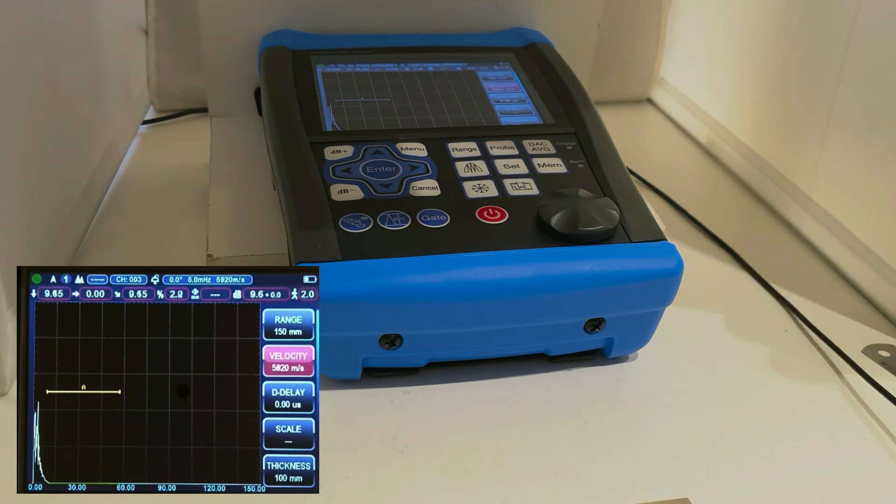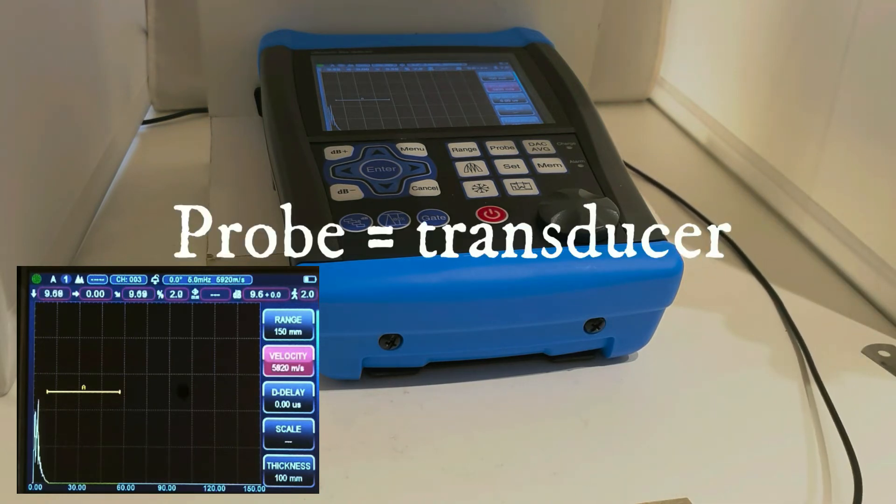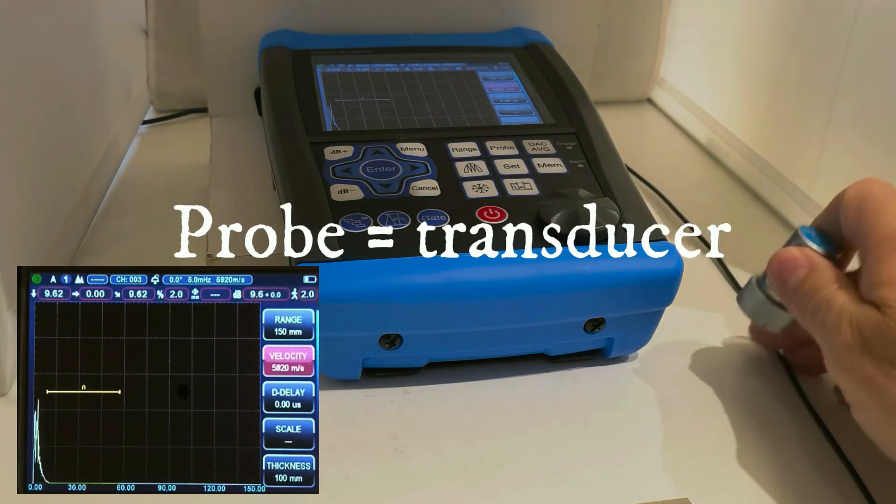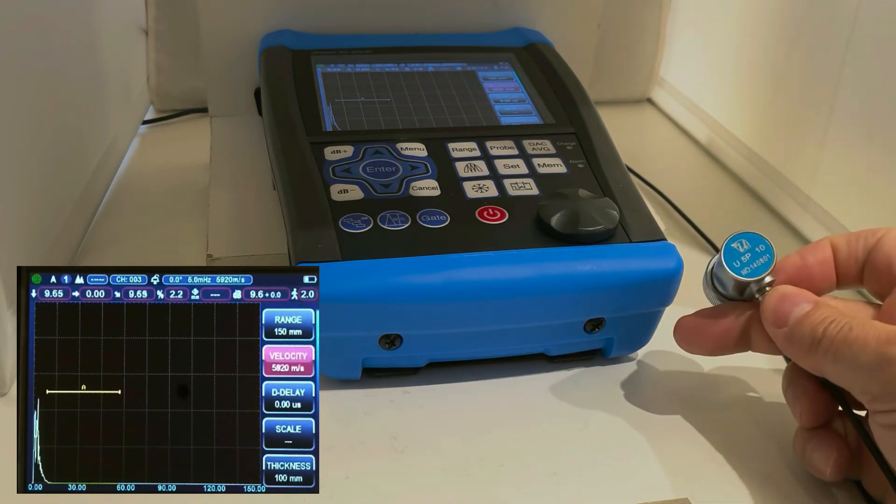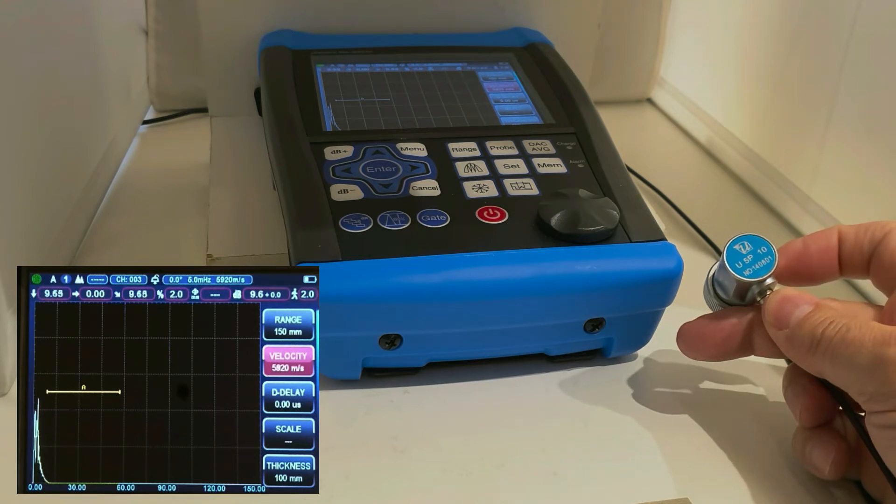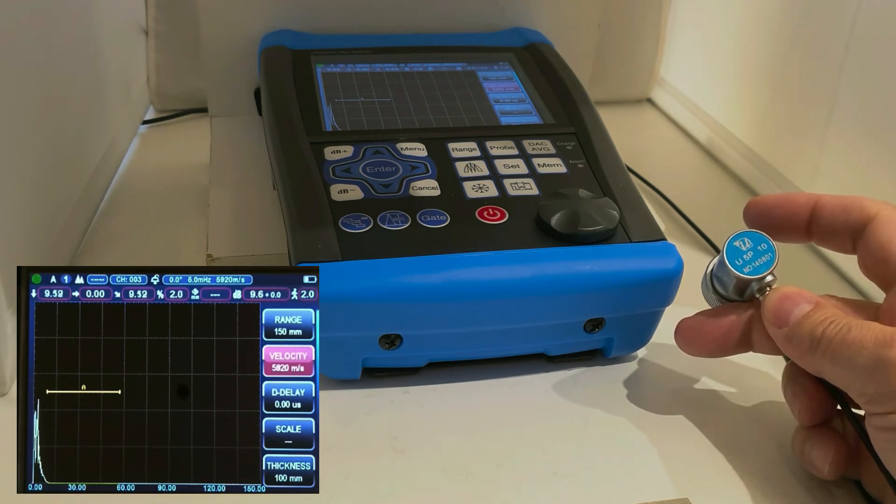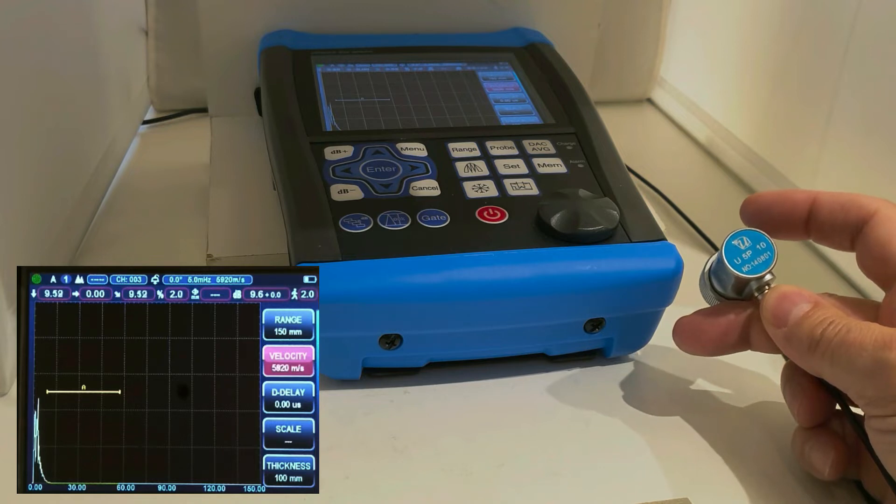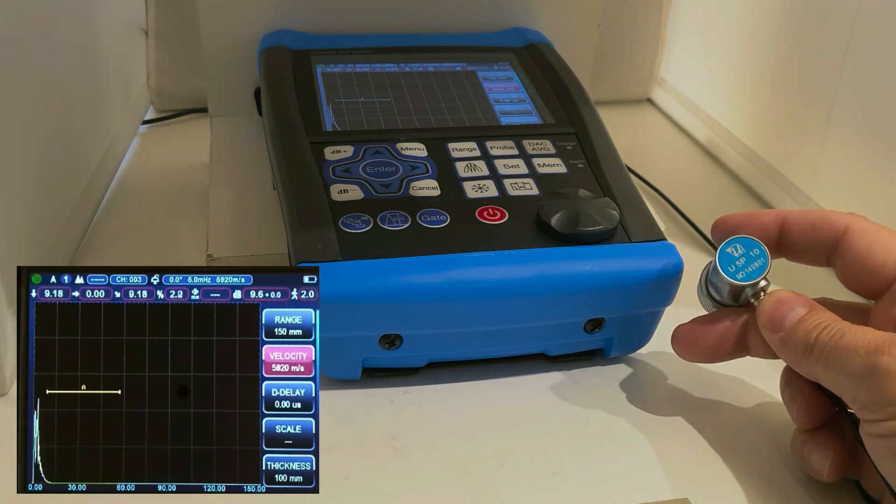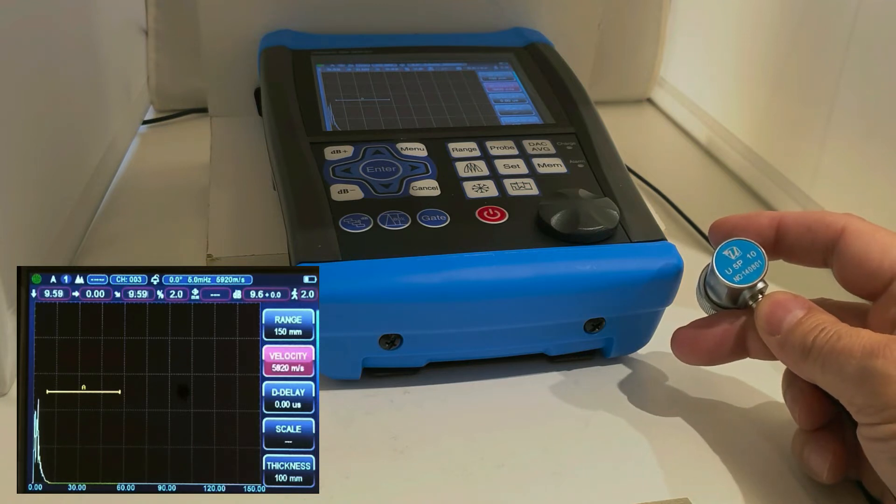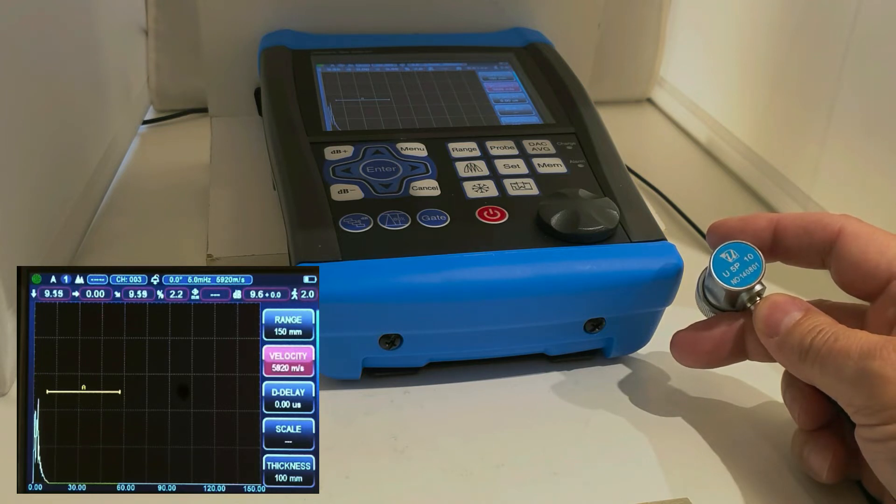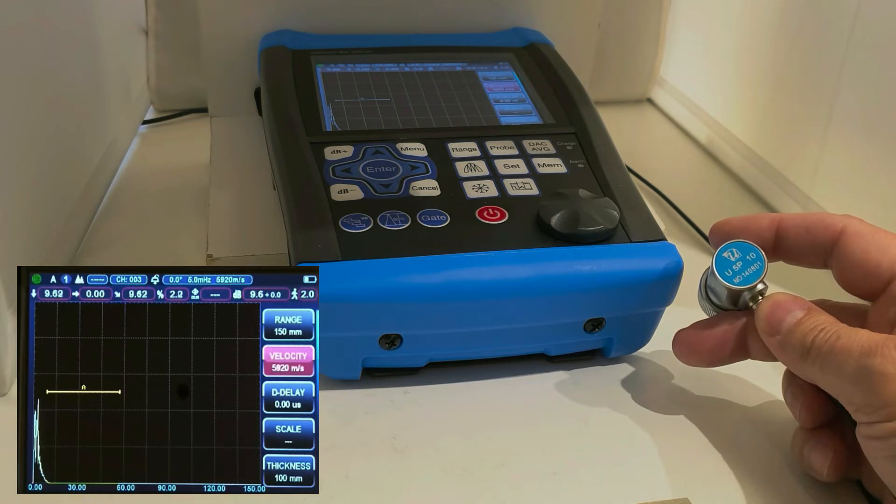An autosonic probe, also called transducer, is connected to the instrument through that cable. So this is the transducer. In our example, we have connected a so-called straight beam probe, which transmits an autosonic wave perpendicular into a test piece. Such a probe acts almost simultaneously as a transmitter and receiver. Let me explain and demonstrate practically how autosonic testing works in principle.